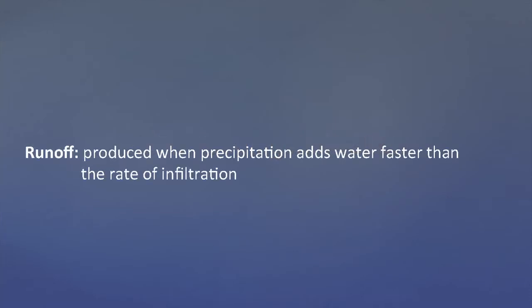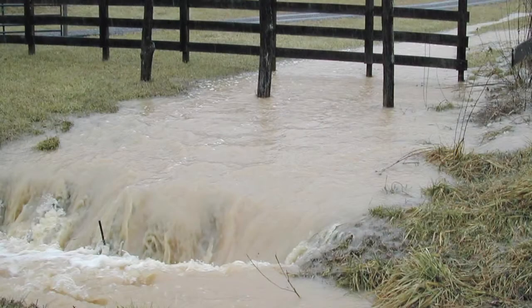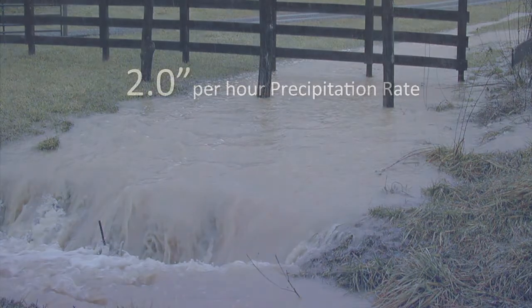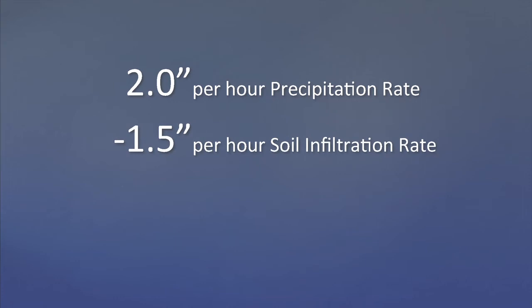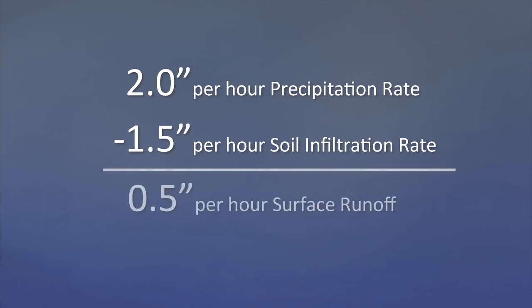Runoff is produced when precipitation or snowmelt adds water to the soil surface faster than the rate at which it can infiltrate the soil. The excess water remains on the surface and flows downslope as overland flow. For example, if the precipitation rate is two inches per hour, but water can infiltrate the soil at the rate of only one and a half inches per hour, surface runoff is produced at the rate of about a half inch per hour.